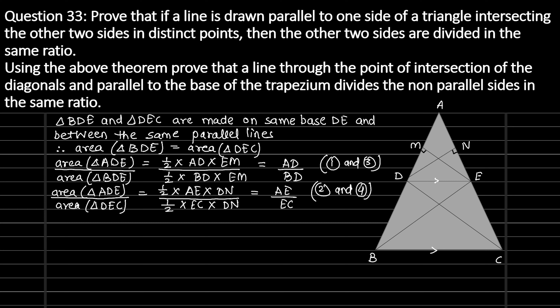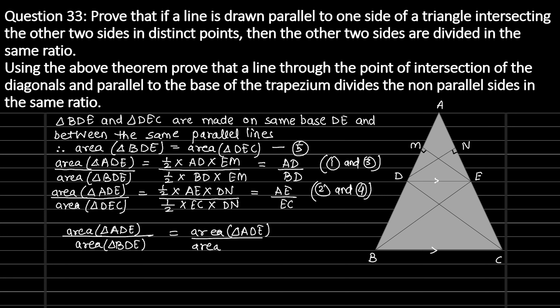Now observe carefully: in both statements the numerator is area of triangle ADE, while the denominators are area of triangle BDE and area of triangle DEC respectively. But from equation 5 we know that area of triangle BDE equals area of triangle DEC. Therefore, area of triangle ADE divided by area of triangle BDE equals area of triangle ADE divided by area of triangle DEC, which gives us AD divided by BD equals AE divided by EC — which is what we needed to prove.